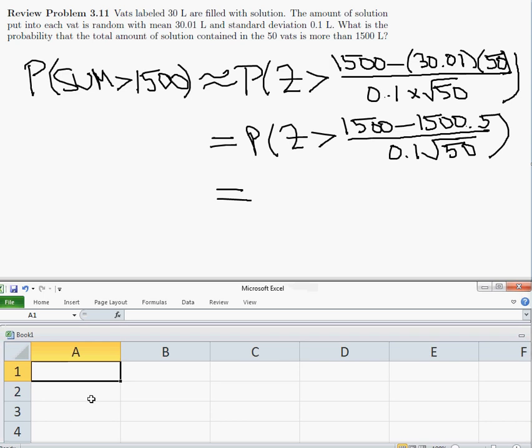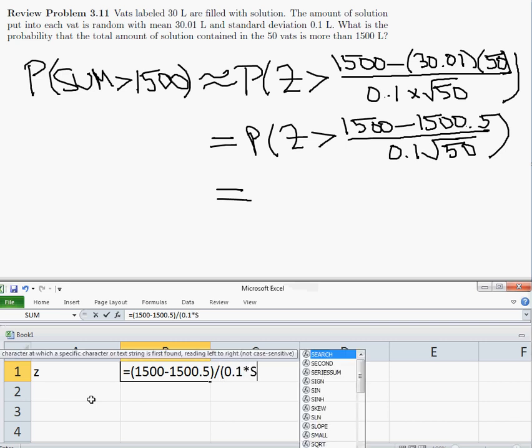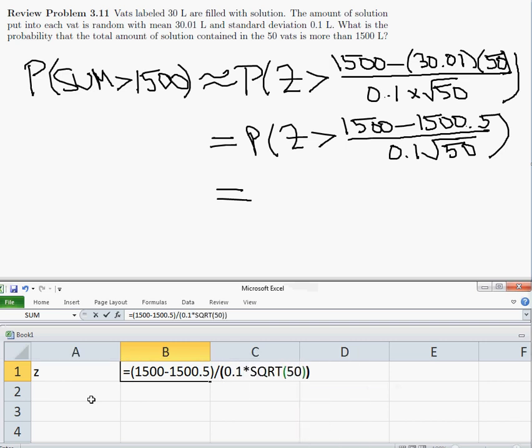Okay, so computing the value of z, we get 1,500 minus 1,500.5 over 0.1 times the square root of 50, so negative 0.707.